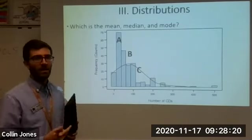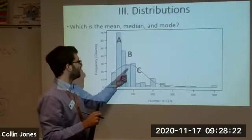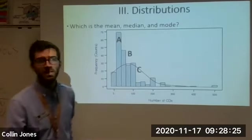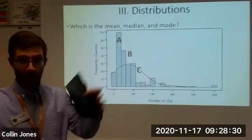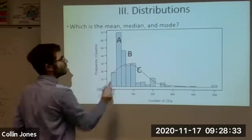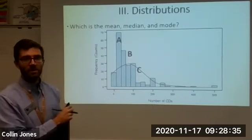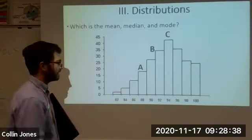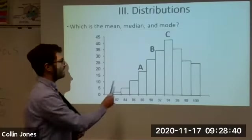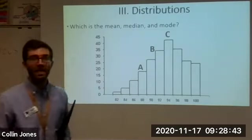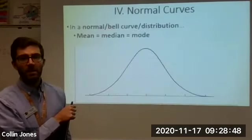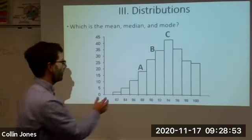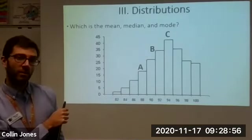You should be able to answer these questions. In a graph like this out of A, B, and C, this is the number of CDs somebody owns. That's old school CDs. Remember CDs? They're like records, but smaller. Okay. So which of these would be the mean, the median, and the mode? You should be able to answer this. We'll look at it in class. And same thing here. This is like grades on a test. Which of these bars would represent the median? Which one would contain the mode? And which one would contain the mean? You should be able to figure this out. We have here, this is a right skewed graph and a left skewed graph, where the tail is. So make sure you can answer those questions.